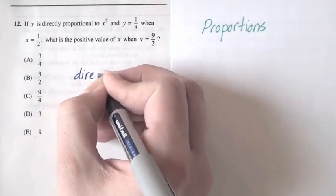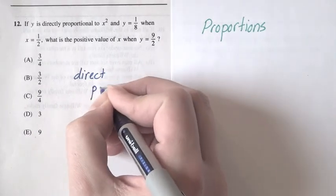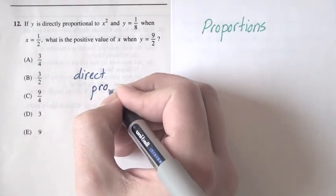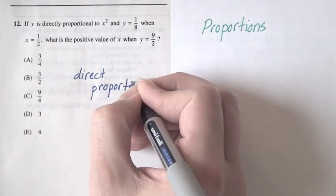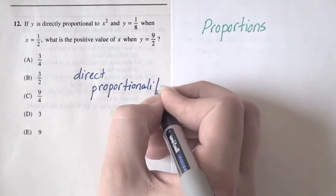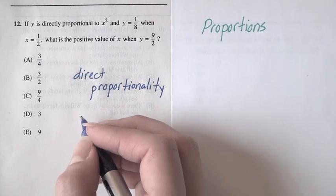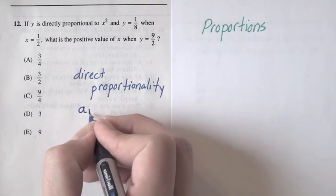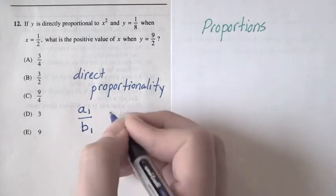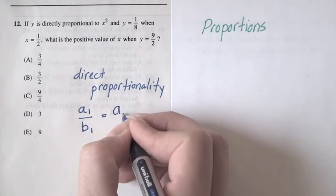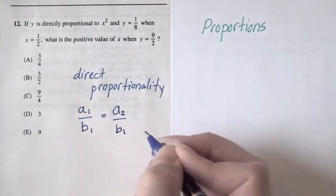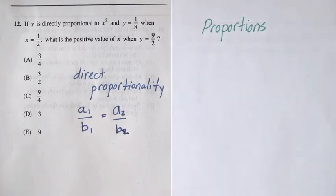Direct proportionality means that if you have two numbers a and b that are directly proportional to each other, that means a1 over b1 is equal to a2 over b2. The ratio between the two numbers a and b is always the same. That's direct proportionality.